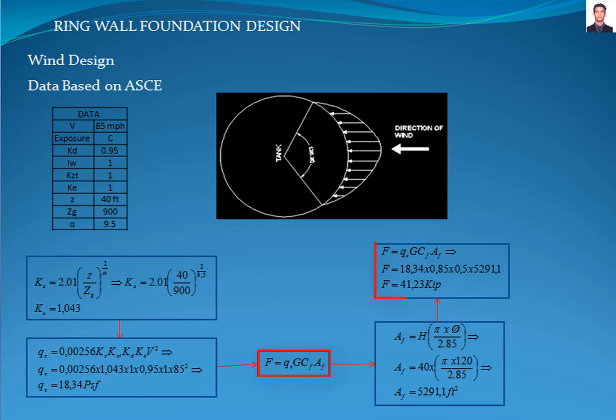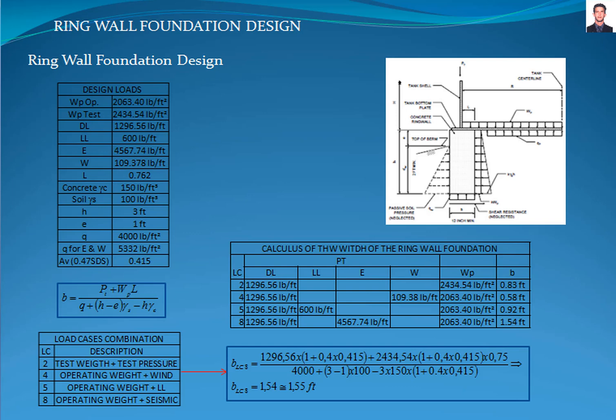Now, we can calculate the design velocity, giving a result of 41.23 kilopounds. The next step is to calculate the load that will be used in the load combinations applicable from the Process Industry Practice STC-01-25 standard.